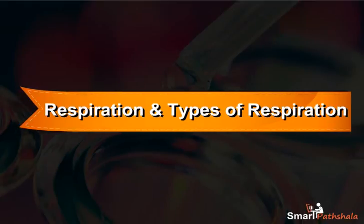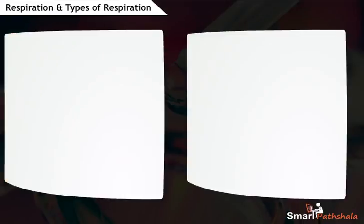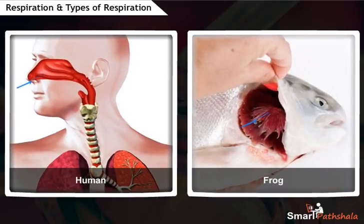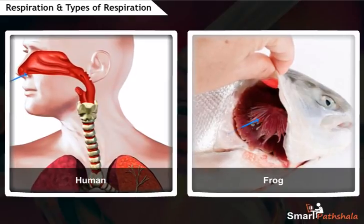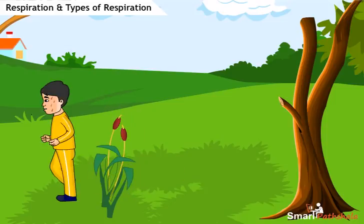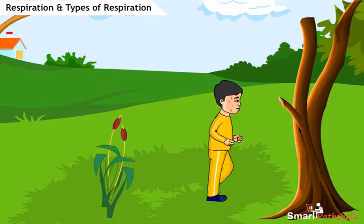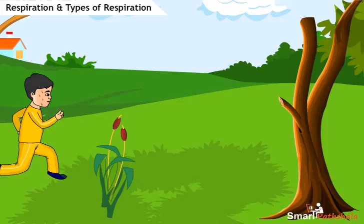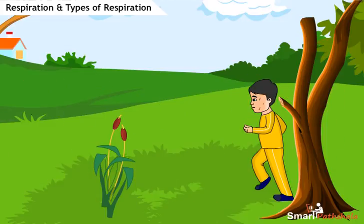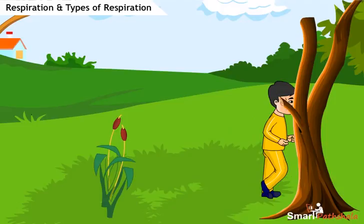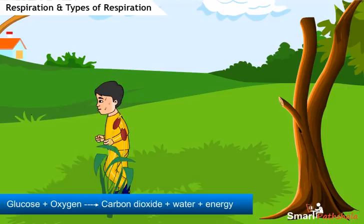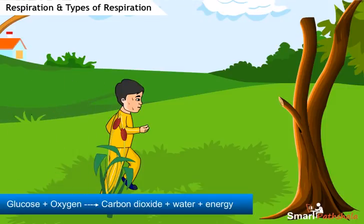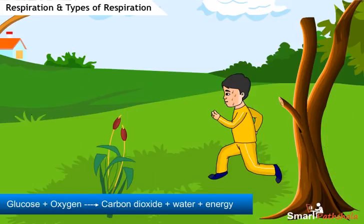In this chapter, let us learn about types of respiration and the process of respiration in humans and various animals. We all know that we breathe faster when we run fast. The reason is we need more energy to run fast, and we need more oxygen to produce more energy. Energy is produced by the oxidation of glucose during respiration. That is why we all respire.